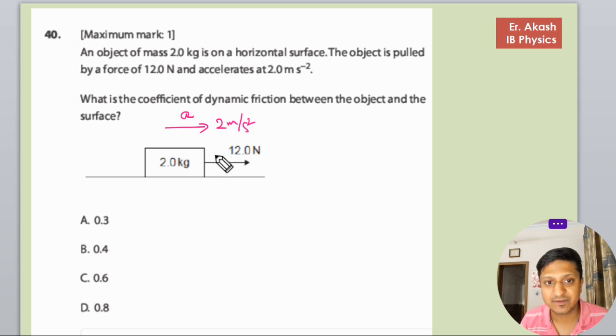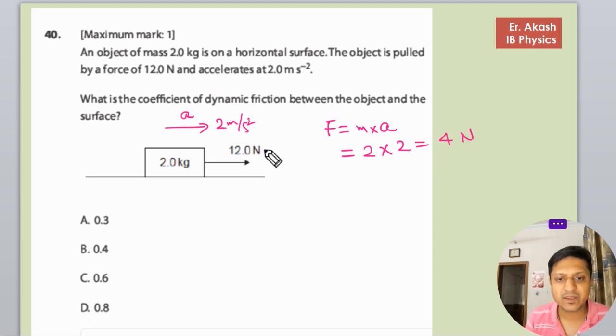net force that is getting used. Force equals m into acceleration, F = ma. The mass of the body is 2 kg, acceleration is 2 meter per second square, then the force is 4 newton.